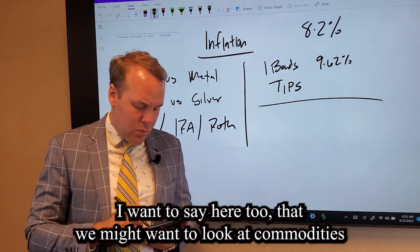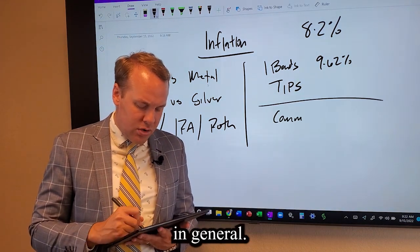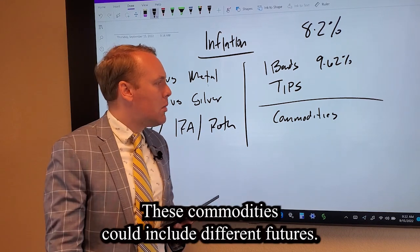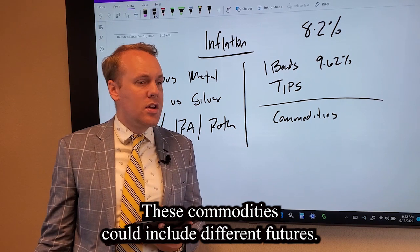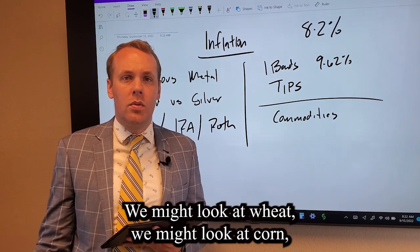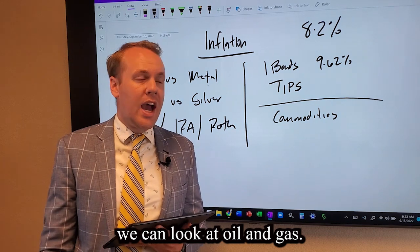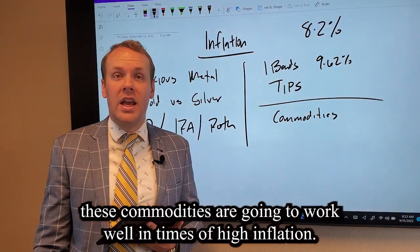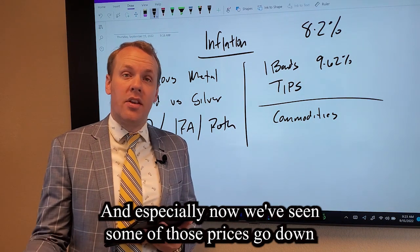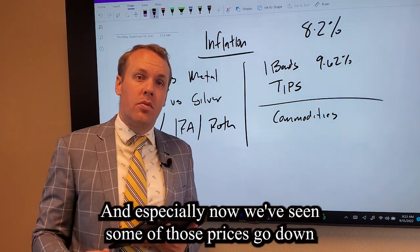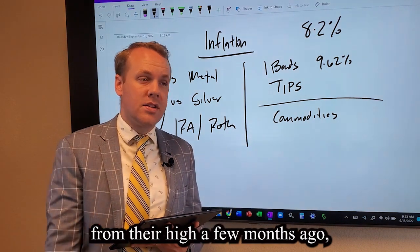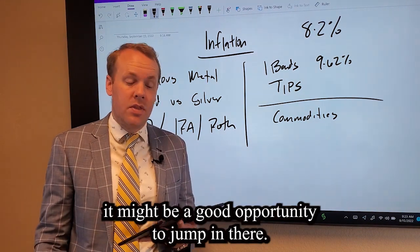I want to say here too that we might want to look at commodities in general. These commodities could include different futures. We might look at wheat, corn, oil and gas. Generally speaking, these commodities are going to work well in times of high inflation. And especially now we've seen some of those prices go down from their high a few months ago. It might be a good opportunity to jump in there.